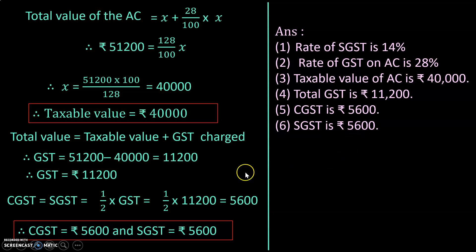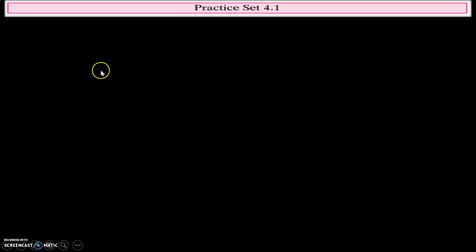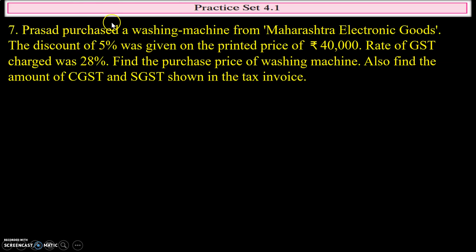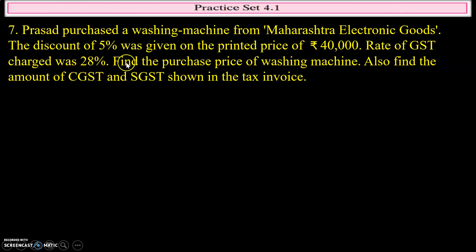Now the seventh question: Prasad purchased a washing machine from Maharashtra Electronics. A discount of 5 percent was given on the printed price of ₹40,000. The rate of GST charged was 28 percent. Find the purchase price of the washing machine, and find the amount of CGST and SGST shown in the tax invoice.